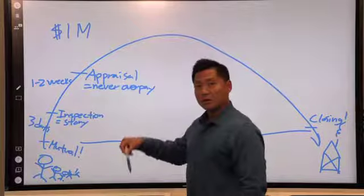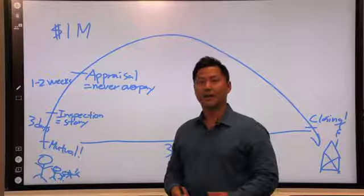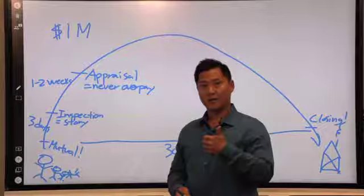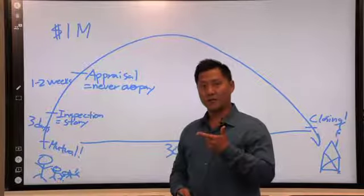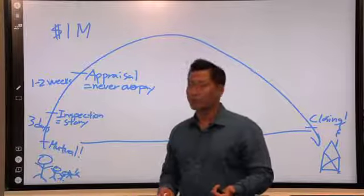If the appraisal comes lower than this price, let's say $950,000, you either can make up the difference by paying cash, you can have the seller discount the $50,000, or meet somewhere in the middle. And the third option is usually where most people go.